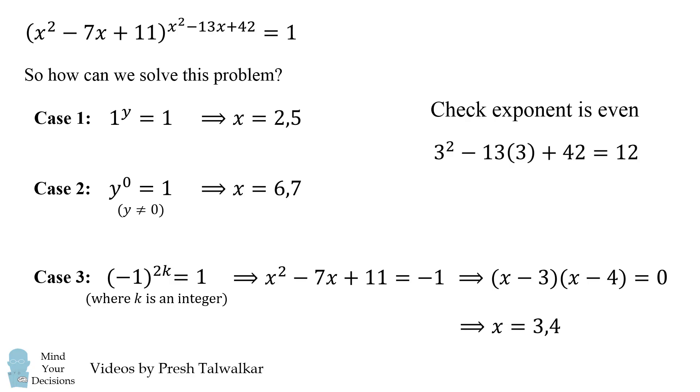So we check that the exponent in each of these cases will be an even number and 12 and 6 are even numbers. So in fact x = 3 and x = 4 are actual solutions.